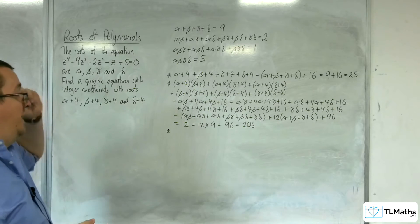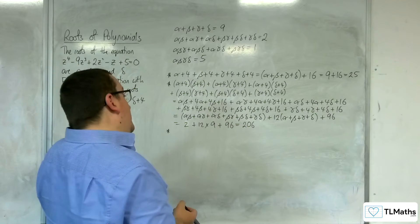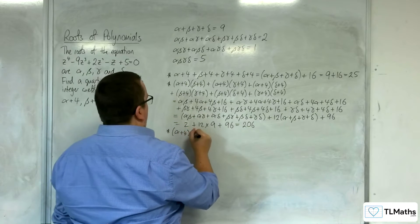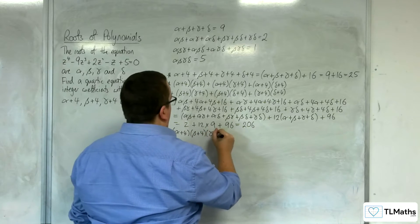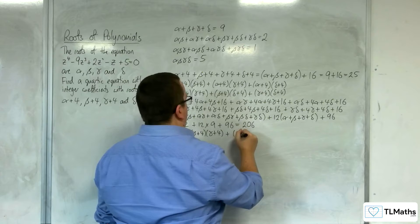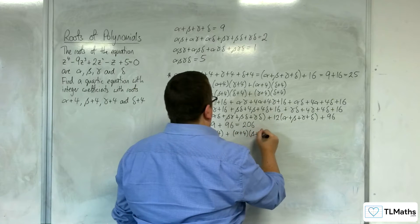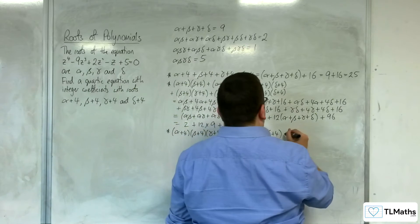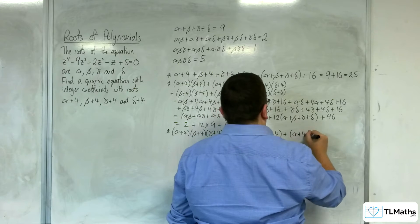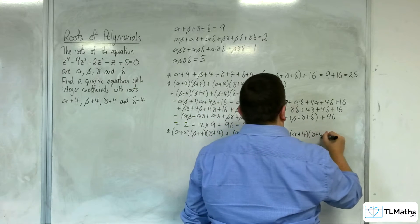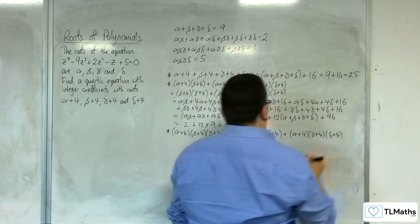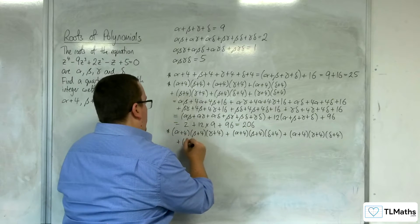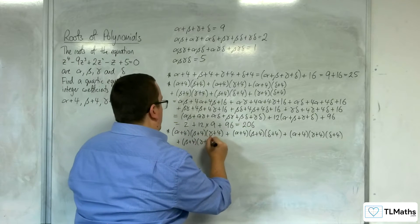This is where it's going to get really messy — you thought it was messy before! Now we need the sum of products of triples: (alpha+4)(beta+4)(gamma+4) + (alpha+4)(beta+4)(delta+4) + (alpha+4)(gamma+4)(delta+4) + (beta+4)(gamma+4)(delta+4).